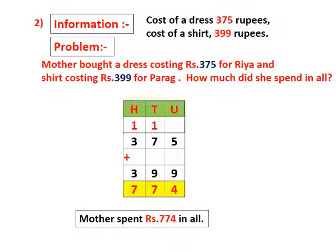Now we prepare a word problem. Mother bought a dress costing Rs. 375 for Ria and a shirt costing Rs. 399 for Parag. How much did she spend in all?